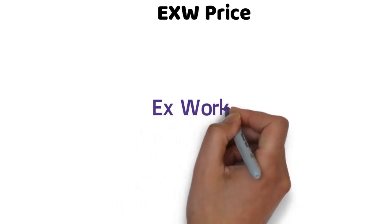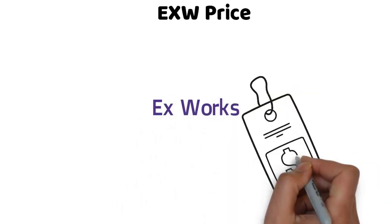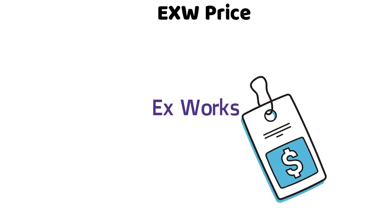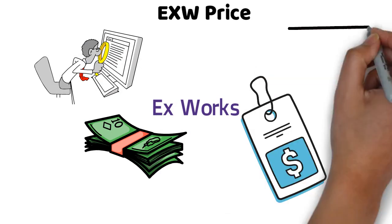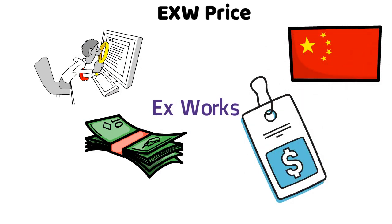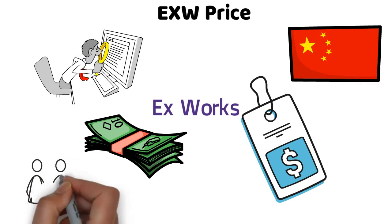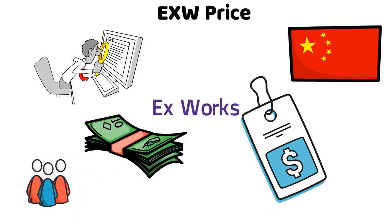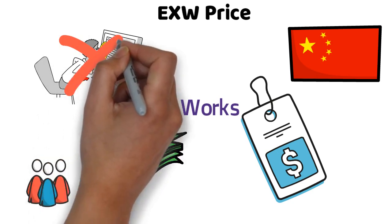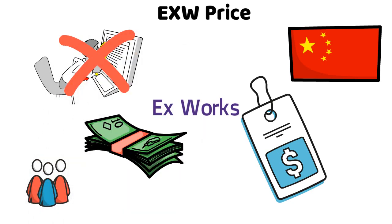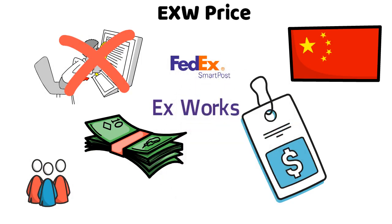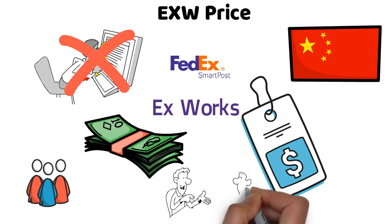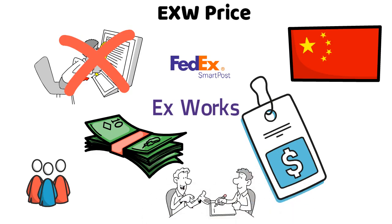Number 2: EXW Price. EXW stands for Ex-Works — it's the original manufacturing price of the products. It does not include any service or domestic shipping cost. You'll need to find your own freight forwarder to pick up the products at the supplier's warehouse in China. To know the original product price, ask your suppliers for the EXW price. If you're using courier services like FedEx for shipping, let the supplier quote you the EXW price, as courier companies will travel to pick up the products at the supplier's address.